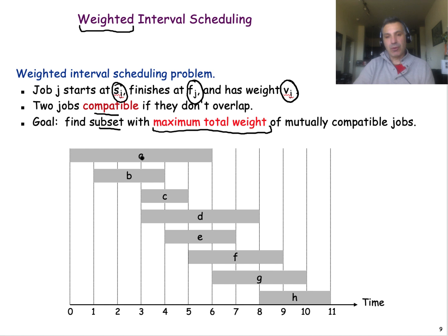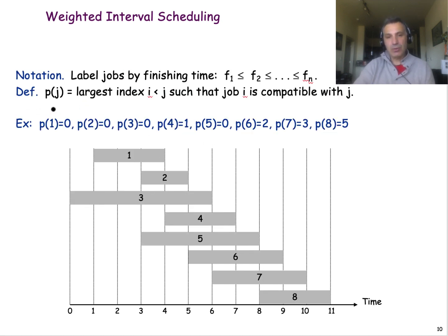These jobs still have to be mutually compatible. So if I pick job A, the only other compatible jobs would be either G or H. Let's say I pick A and G — in that case, the weight I would get from this subset is the weight of A, which is VA, plus the weight of G, which is VG. Of course, you can make other choices. Let's introduce some notation to make it easy to talk about which jobs are compatible with a given job J.